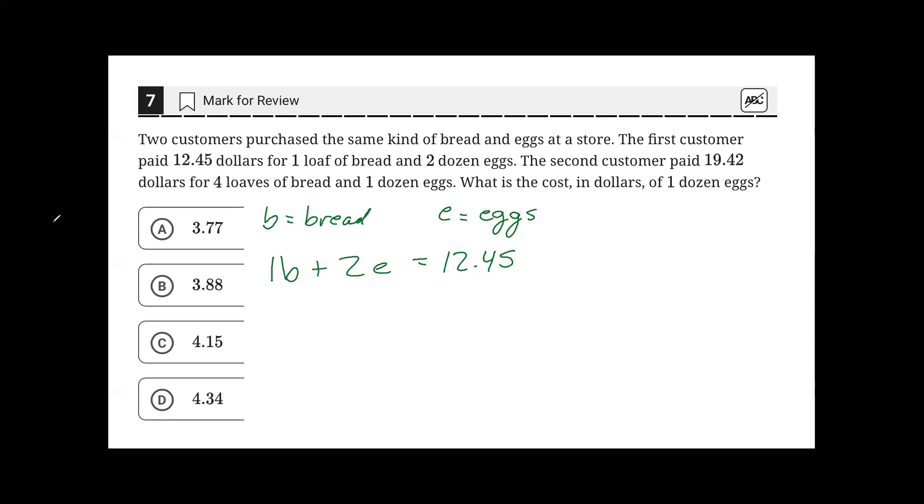The second equation, four loaves of bread plus one dozen eggs is $19.42.